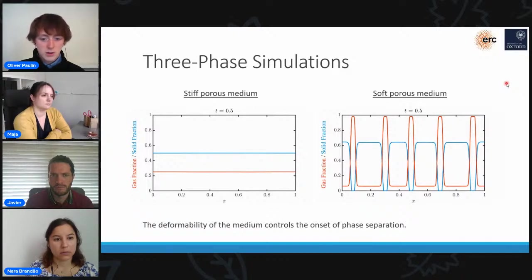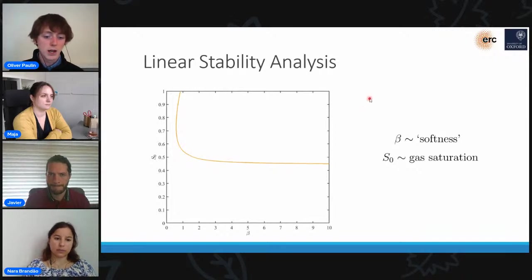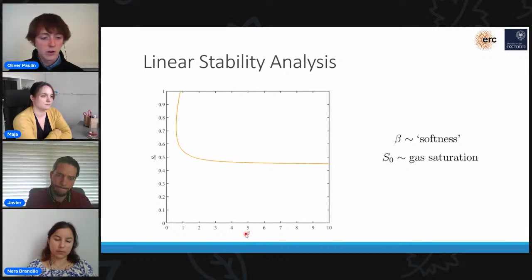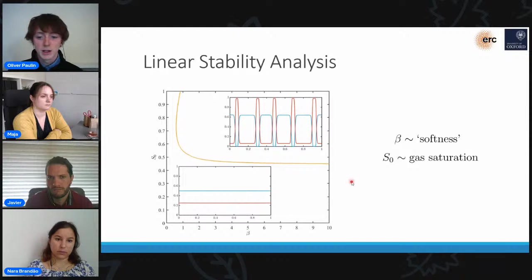In order to work out or to think about which parameters control this phase separation process more quantitatively, in addition to our simulations, we also conducted a linear stability analysis of our model. And so we can produce this phase plane here, which shows the stable and unstable regions in parameter space for various different values of the softness and the gas saturation. So in this top right region up here, this is the unstable region of our system, and this is where we'll get the formation of the open cavities. And this bottom region down here is the stable region where the gas will just remain within the pore space.